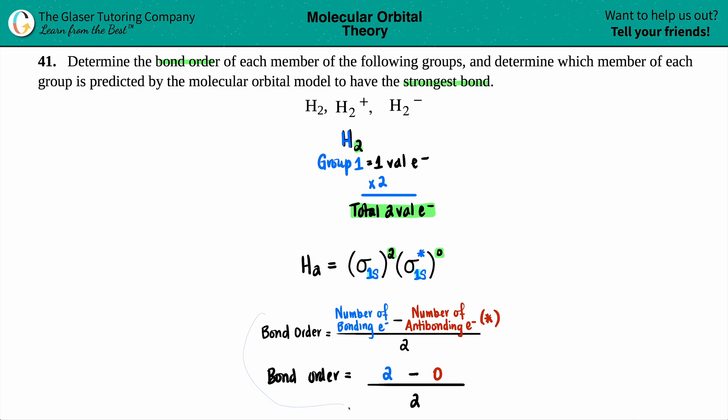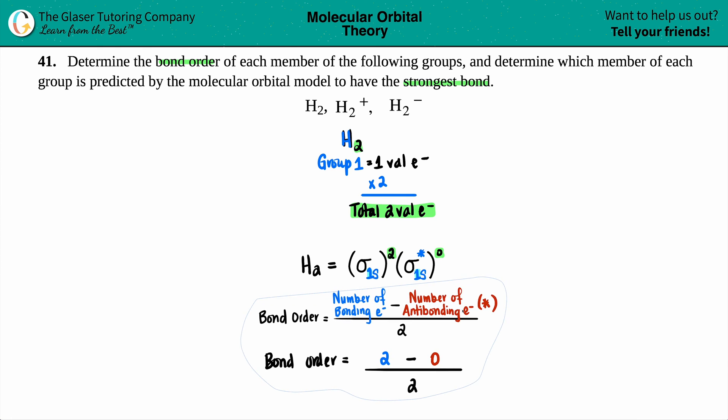So in this case, I have two bonding electrons and zero antibonding because there's no electrons here. So maybe what I can do is I'll just pull this up. And now let's just do the math. Bond order for the H2 one, two minus zero is two divided by two, which is a bond order of one.